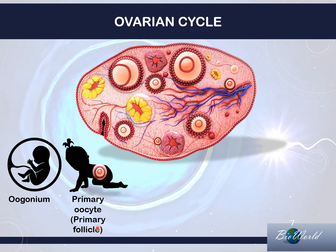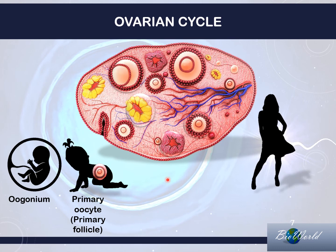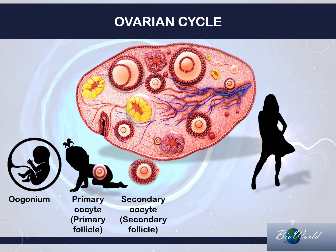A primary oocyte that is surrounded by follicle cells is called a primary follicle. As the little girl grows up, the primary oocyte will remain dormant or inactive until she reaches puberty. Once she reaches puberty, the primary oocyte will do meiosis I to become a secondary oocyte. The secondary oocyte is still surrounded by follicular cells, so it is also known as the secondary follicle.